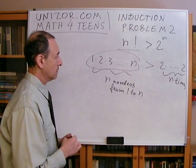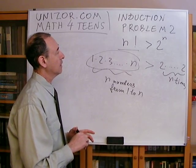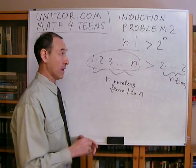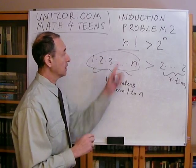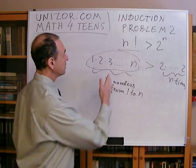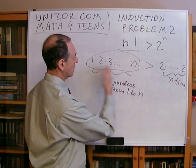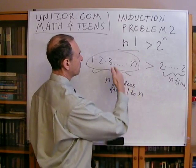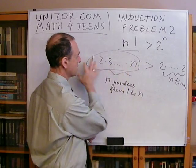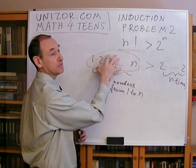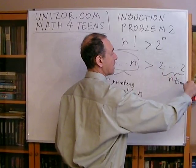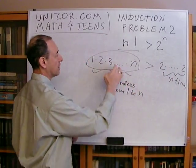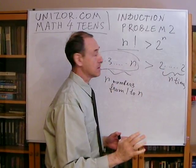Let me give you a little hint. If you start checking this formula for n equal to one, or even two, or even three, it will be wrong. But basically, you feel that the more numbers on the left, the bigger n is, we are multiplying by a bigger and bigger number, so this thing is growing quite fast. This thing — two to the n — is growing with the same speed; it's always times two.